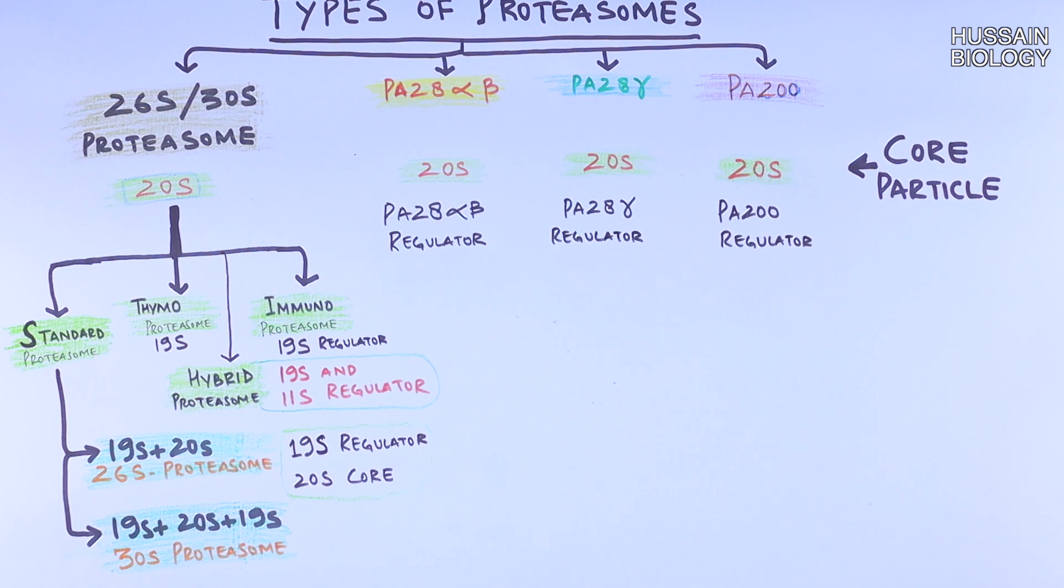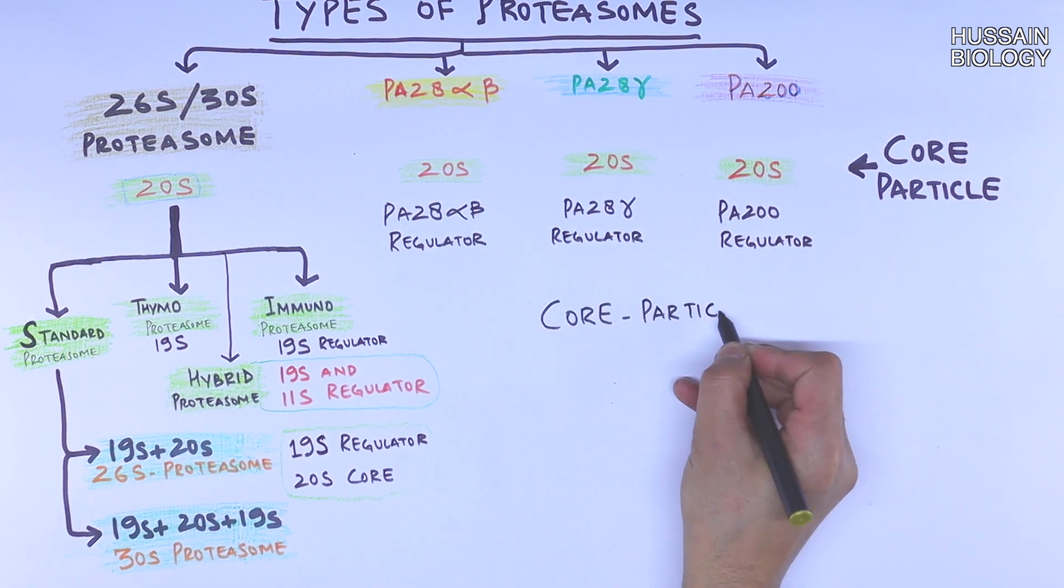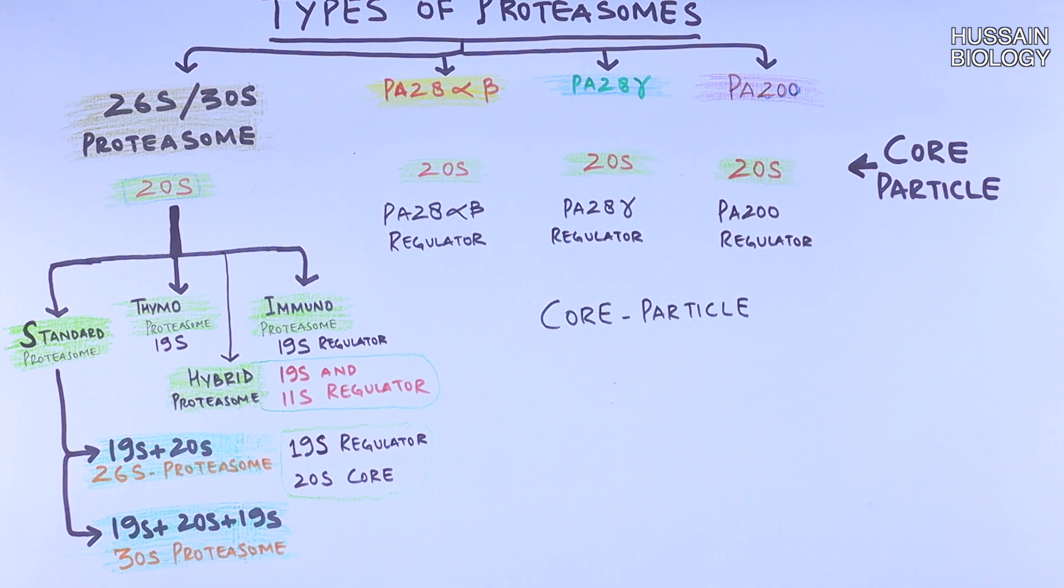The basic structure of 20S core remains same in these types, but there are modifications at few residues. If we see the 20S core of proteasome, it has got alpha subunits as outer rings and beta subunits as inner rings.